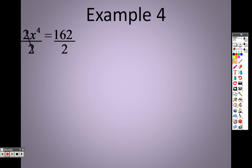So if I divide both sides by that 2, and I get rid of that, 162 divided by 2 is 81, and I still have that x to the 4th.